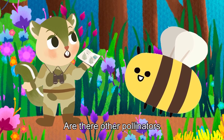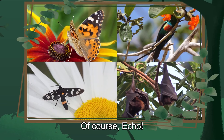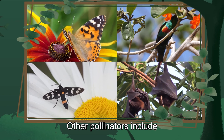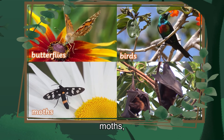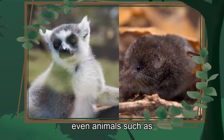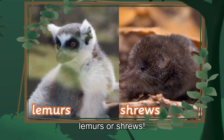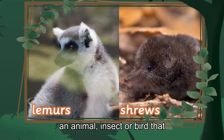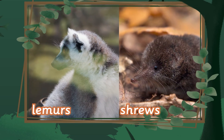Are there other pollinators apart from bees? Other pollinators include butterflies, birds, moths, bats, even animals such as lemurs or shrews. A pollinator is just an animal, insect, or bird that regularly transports pollen.